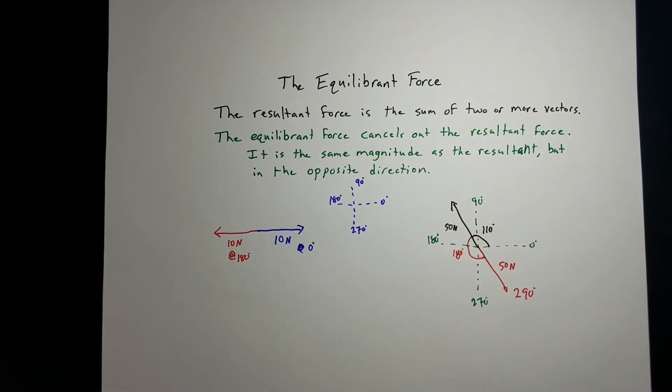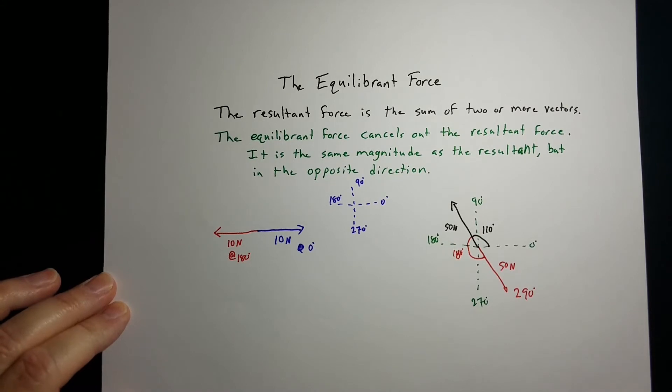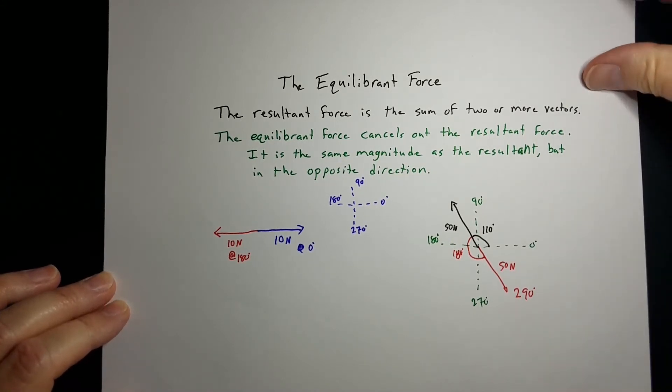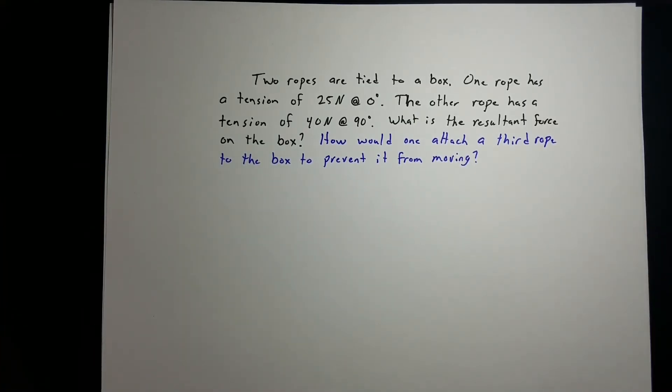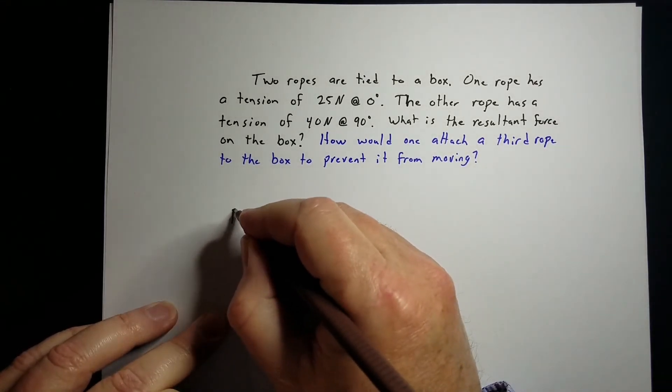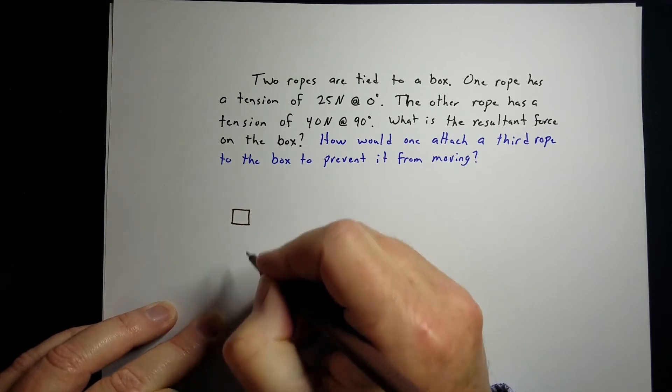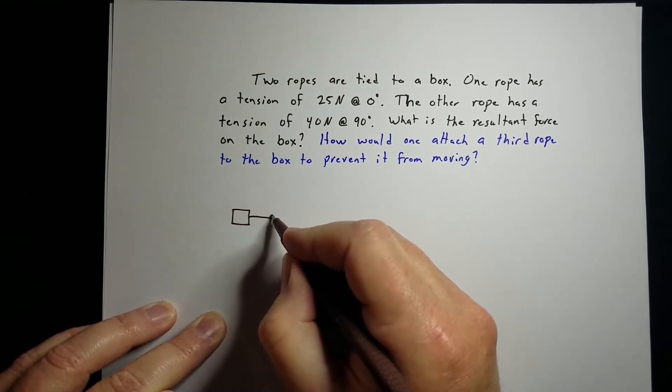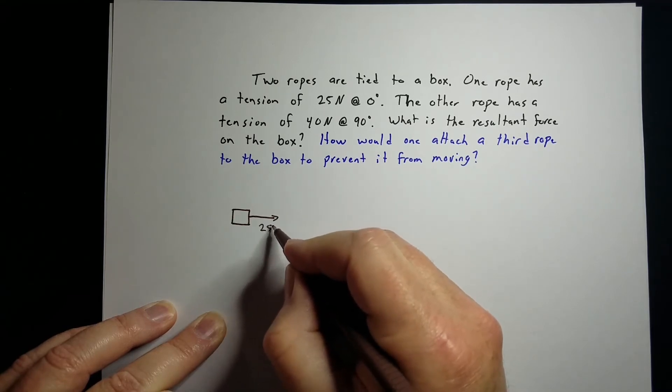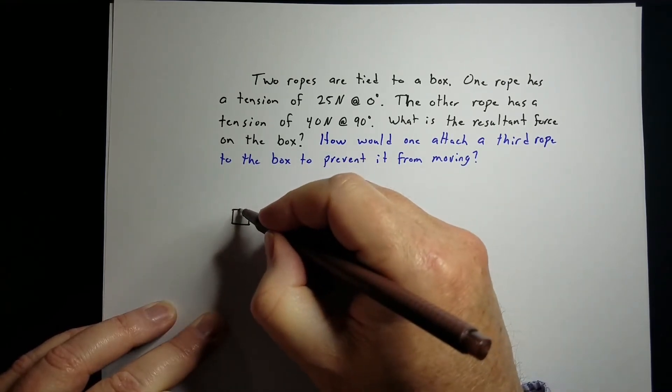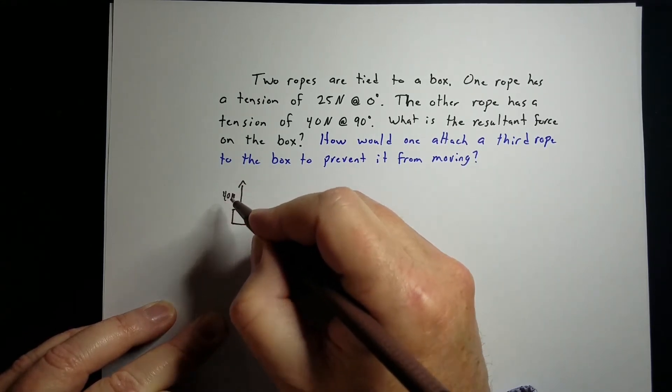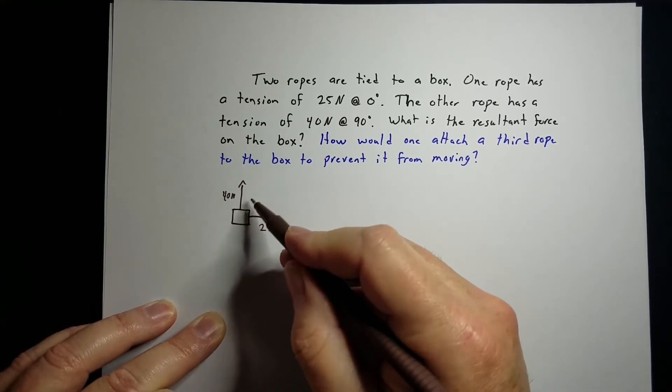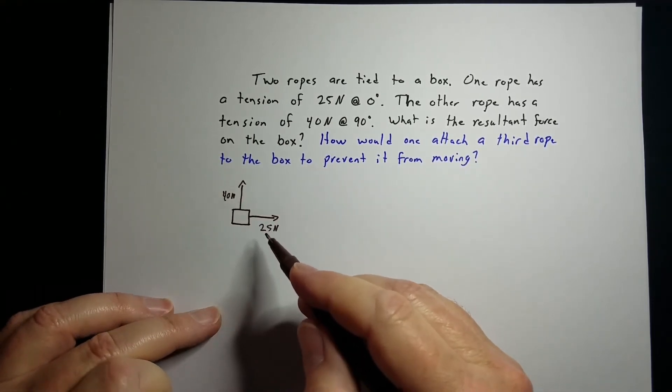But a lot of times they don't ask you for the equilibrium. They've got a more subtle way of asking that question. Let's look at a problem. Here we've got two ropes tied to a box. We've got a rope at 0 degrees with 25 newton tension, one at 90 degrees with 40 newtons of tension in it. The resultant should be off in that direction. That's a picture of what's going on.